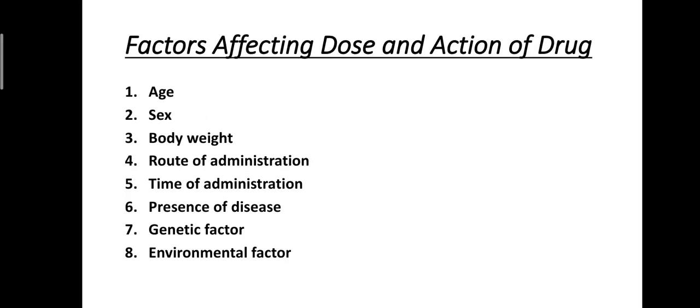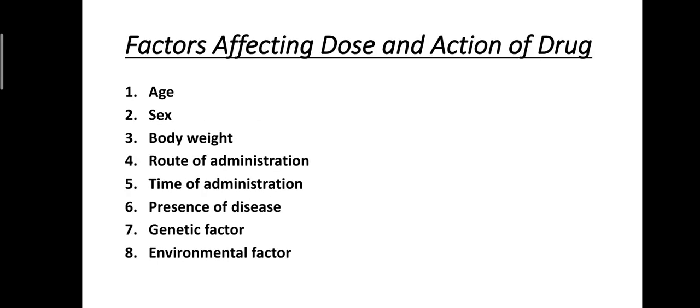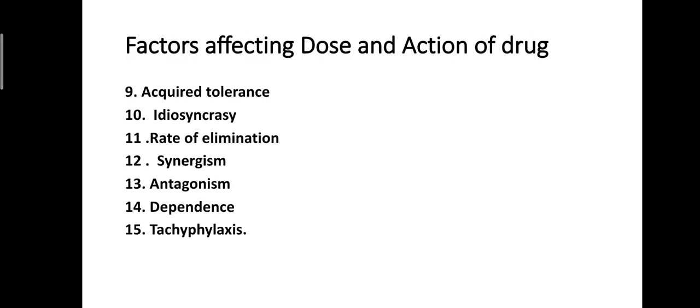Factors affecting dose and action of drug. These are as follows. There are 15 factors which affect dose and action of drug: first age, sex, body weight, route of administration, time of administration, presence of disease, genetic factors, environmental factors, acquired tolerance, idiosyncrasy, rate of elimination, synergism, antagonism.